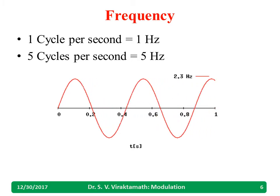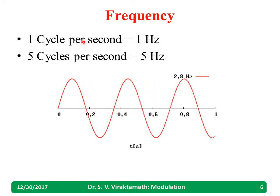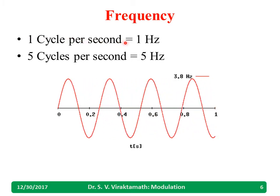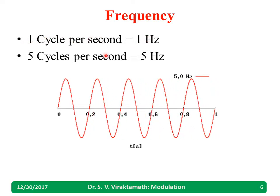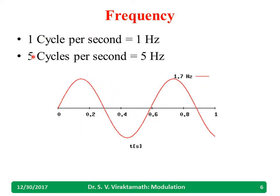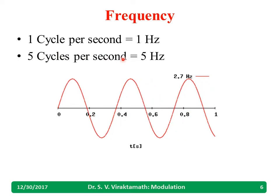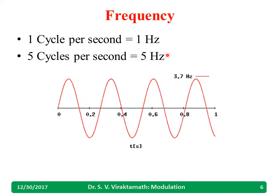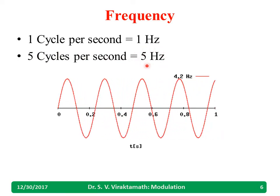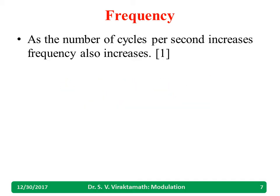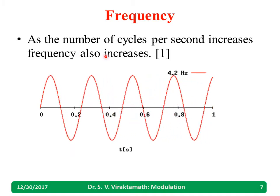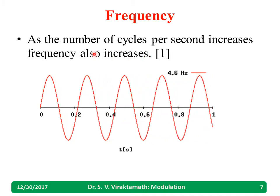Frequency means a number of cycles per second. For example, one hertz means one cycle per second. If it reaches five cycles per second, then the frequency is five hertz. As the number of cycles per second increases, the frequency also increases.